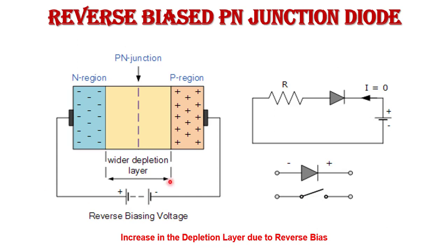In reverse bias, a reverse saturation current flows in the diode due to the movement of minority carriers. The N-type region has minority carrier holes and the P-side has minority carrier electrons. The movement of these minority carriers produces a current in the reverse direction — called reverse saturation current — which is a few microamperes for germanium diode and a few nanoamperes for silicon diode.